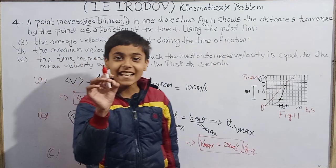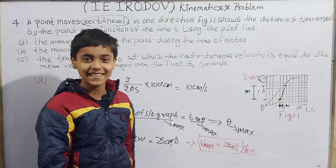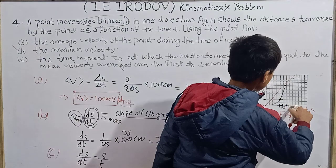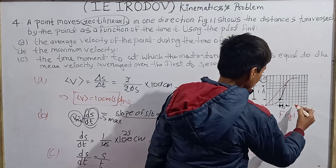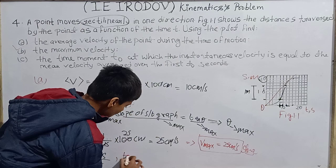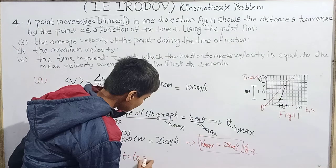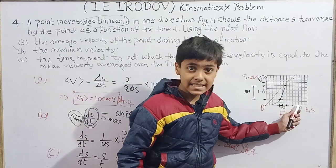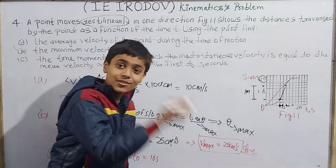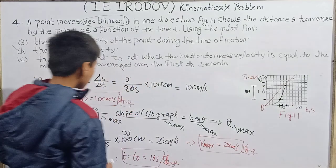Whenever velocity is constant, the average velocity and instantaneous velocity are automatically equal — nothing can stop that. The tangent identifies a constant velocity interval. Looking at the graph, at time t₀ — the time given in the question — the velocity is constant at approximately t equals 16 seconds. So t₀ equals 16 seconds, because at that point the average and instantaneous velocities are equal.